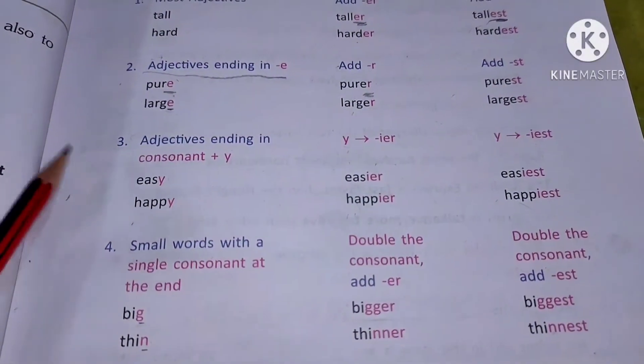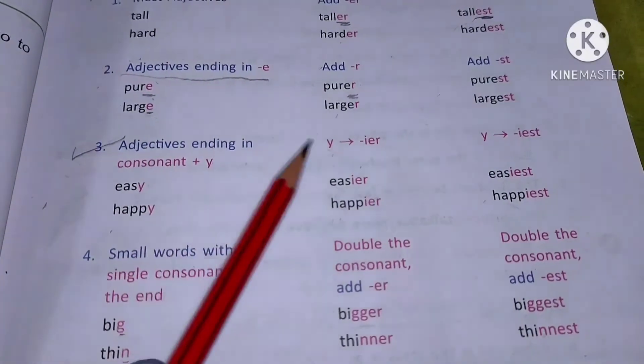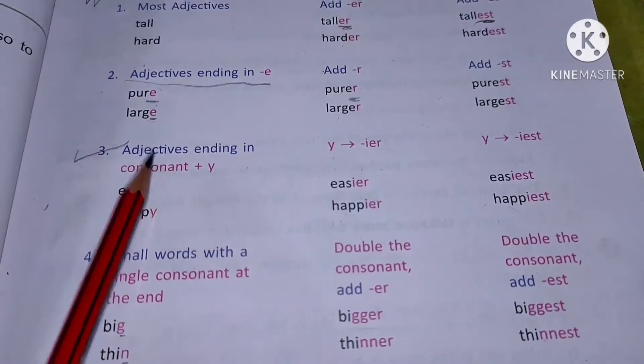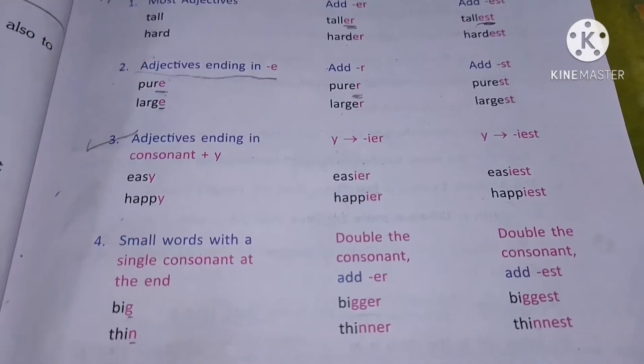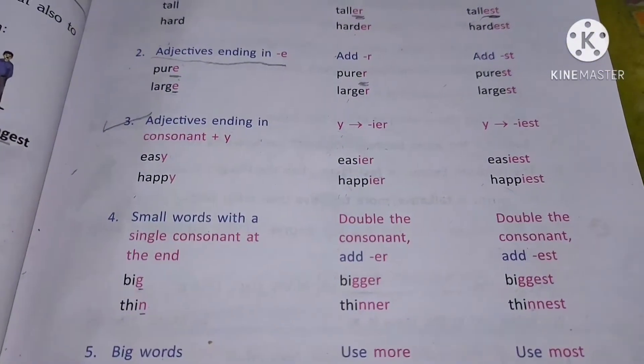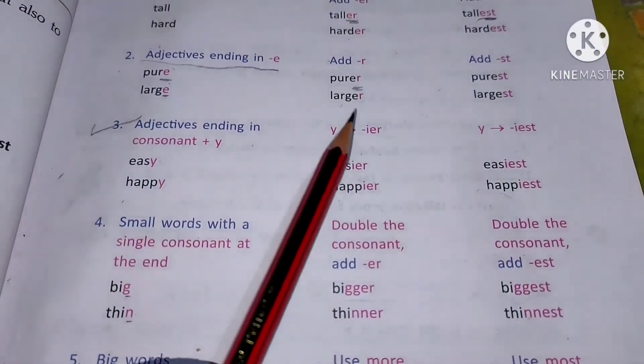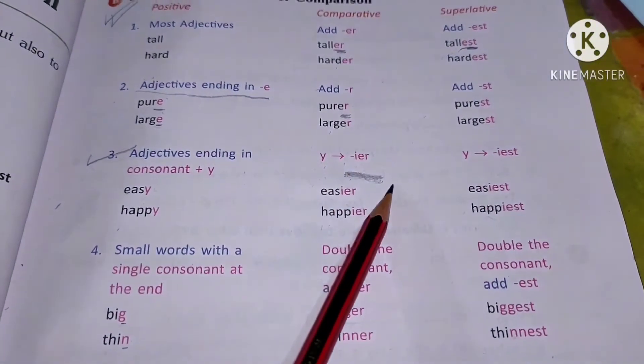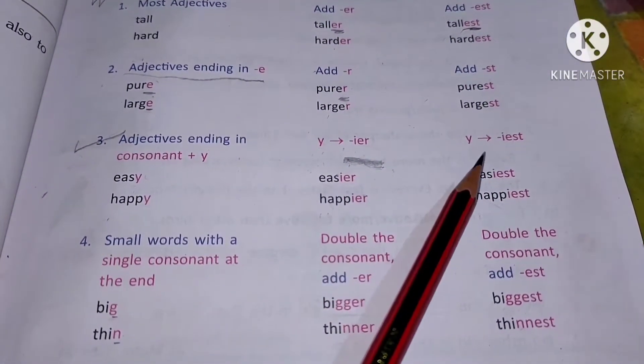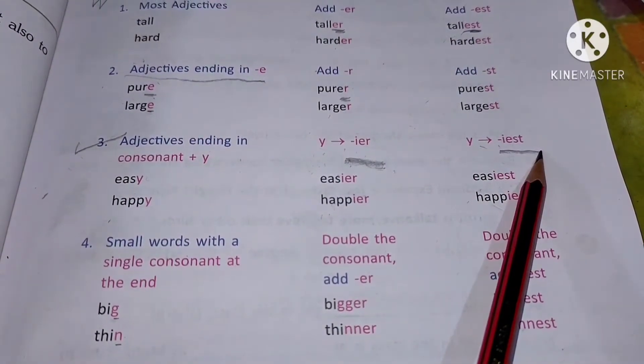Now coming to the third one: adjectives ending in y. When we are talking about comparative, the rule that is applied is add i-e-r, and in superlative just add i-e-s-t.